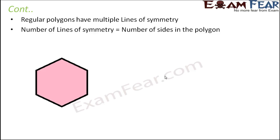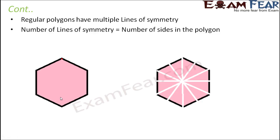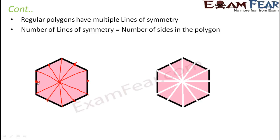Can you tell me how many lines of symmetry would be there in a regular hexagon? A regular hexagon has six sides, therefore it would have six lines of symmetry. These are: three lines joining the opposite vertices — one, two, and three — and three lines joining the midpoints of the opposite sides — one, two, and three. So three plus three equals six lines of symmetry in a regular hexagon.